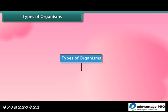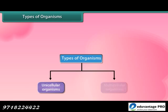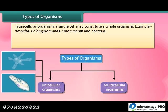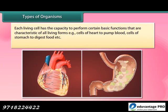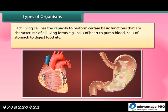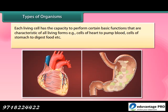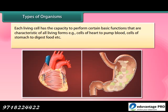Types of organisms — unicellular and multicellular. In unicellular organisms, a single cell may constitute a whole organism; examples include amoeba, chlamydomonas, paramecium and bacteria. In multicellular organisms, many cells group together in a single body and assume different functions to form various body parts; examples include some fungi, plants and animals. Each living cell has the capacity to perform certain basic functions, such as cells of the heart to pump blood, and cells of the stomach to digest food.